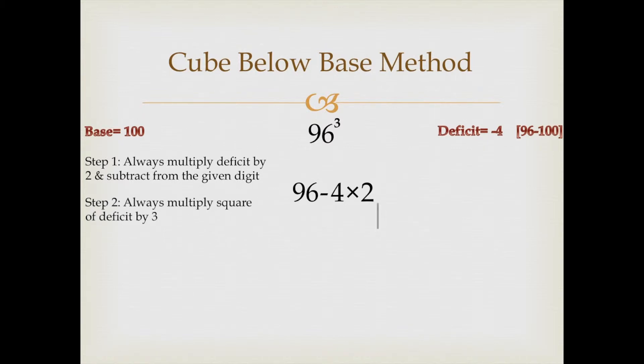In the second step, we would multiply the square of the deficit which is minus 4 by 3.